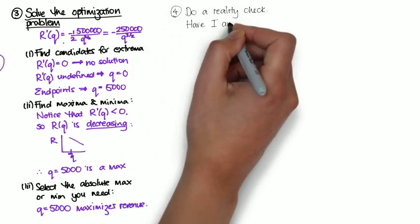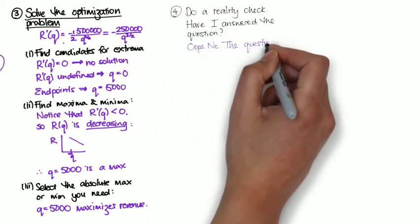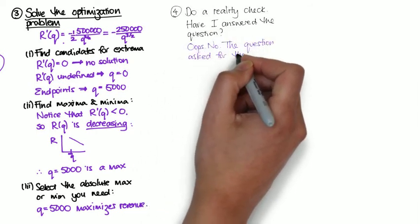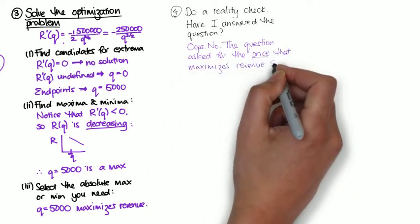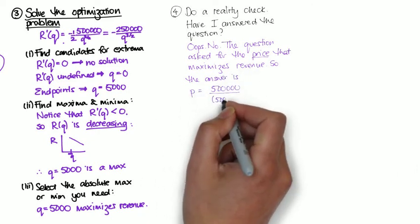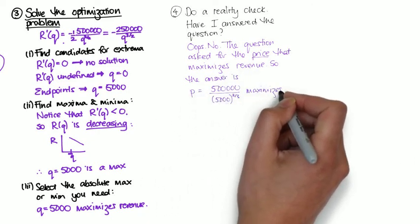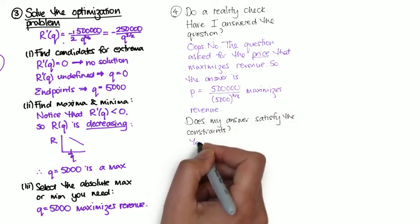It's a good idea to do a reality check. At the moment I've found that the quantity of 5000 maximises revenue, but if I check have I answered the question, I'll see that no, no I haven't. I actually needed to give a price. But I have an equation that links price and quantity, so I can just give my answer, p is equal to 500,000 over 5000 to the 2 thirds.